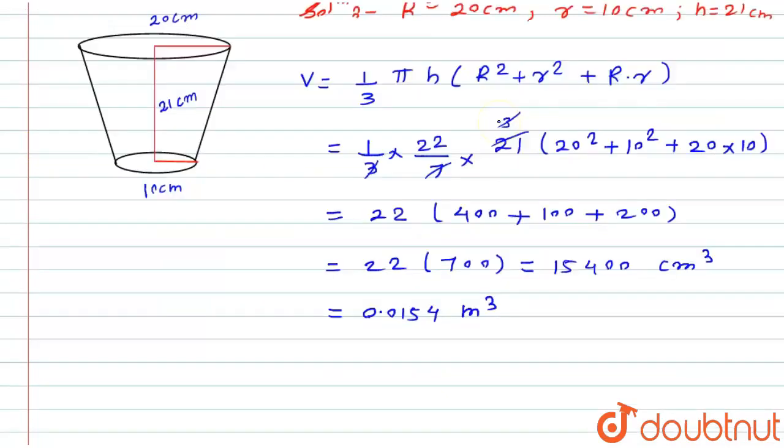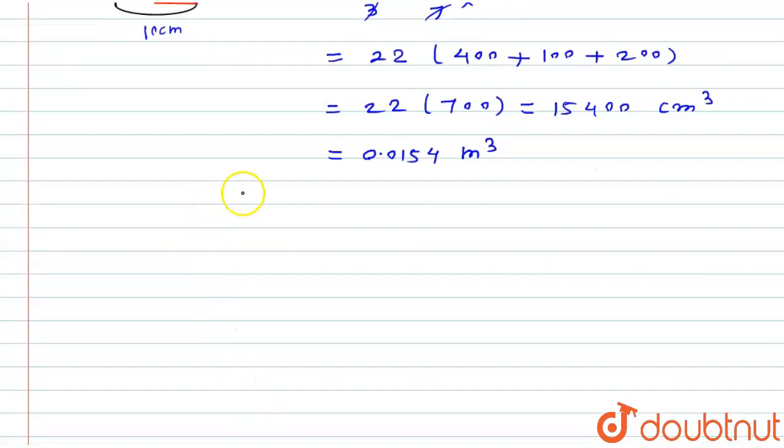So volume will be for per liter, that is I have to multiply this volume that is 0.0154, multiply by 1000. So here I will get 15.4 liter. This volume I will get in liter.